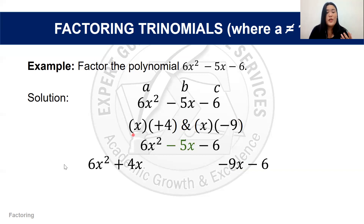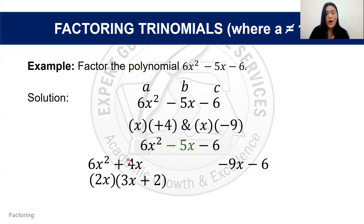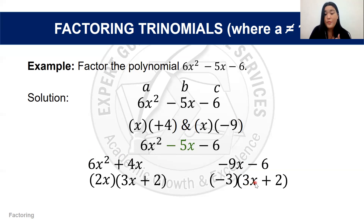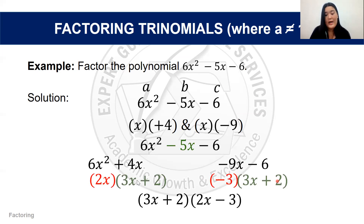Separating the terms for grouping: for 6x² + 4x, we factor out 2x to get 2x(3x + 2). For -9x - 6, we factor out -3 to get -3(3x + 2). Both groups share the factor (3x + 2), so by factoring that out we get (3x + 2)(2x - 3). These are the factors of the polynomial.